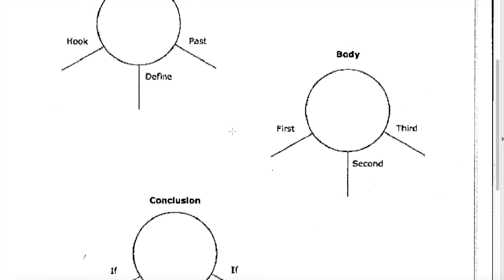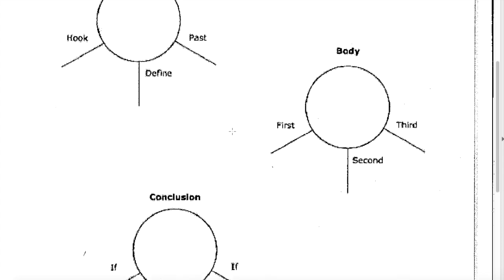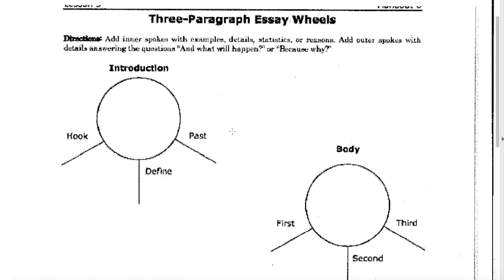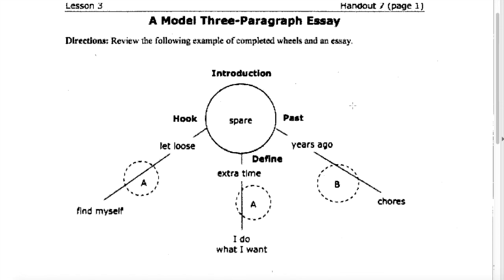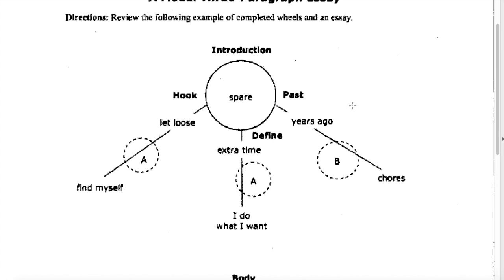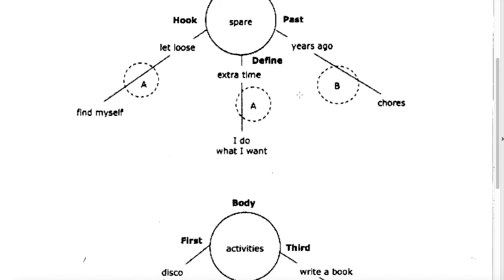Here are my three wheels and spokes representing my three paragraphs for the topic spare time — what do I do with spare time, what could I do with my spare time? In my introduction, I talk about maybe with my hook letting myself loose and finding myself. When I define spare time, it's extra time and what I want to do with it. And years ago, spare time was about doing chores.